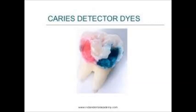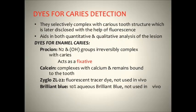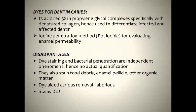Next are caries detector dyes, which are used to provide a visual location of carious dentin. Caries detection dyes are applied directly to the teeth being treated. Healthy tissue is unaffected, while infected dentin takes on the color of the dye. These materials help distinguish between affected and infected dentin. Dyes selectively complex with the carious tooth structure, which is later disclosed with the help of fluorescence, aiding in both quantitative and qualitative analysis of the lesion. There are two types of dyes: dyes used for enamel caries and dyes used for dentinal caries. Disadvantages include: dye staining and bacterial penetration are independent phenomena, so there is no actual quantification. Dyes also stain food debris, enamel pellicle, other organic matter, and the dentinoenamel junction.